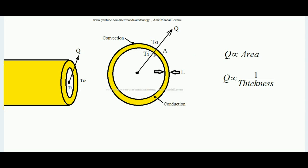Starting my analysis from the inner surface of the cylinder: first, heat will conduct through the insulation, because insulation is made of solid material. When heat reaches the ultimate outer peripheral surface of the insulation, it then moves to the environment by convection. So first, conduction takes place through the insulation, and then convection occurs as heat ultimately dissipates into the environment.